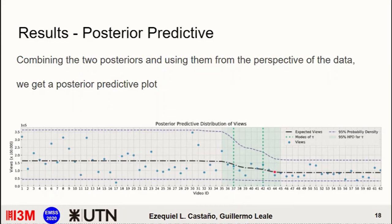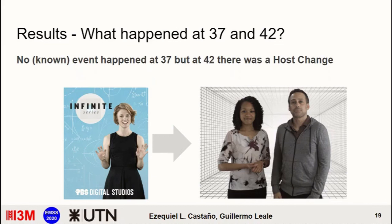So a good question would be what happened at 37 and 42. Right now, there are no known issues or things that happened at 37. But actually at 42, something interesting happened. And namely, there was a host chain in the program. And that actually ended up changing the behavior of the audience. In this case, the model was not provided with any kind of information for this particular change. But still, it was able to detect that change with high accuracy.